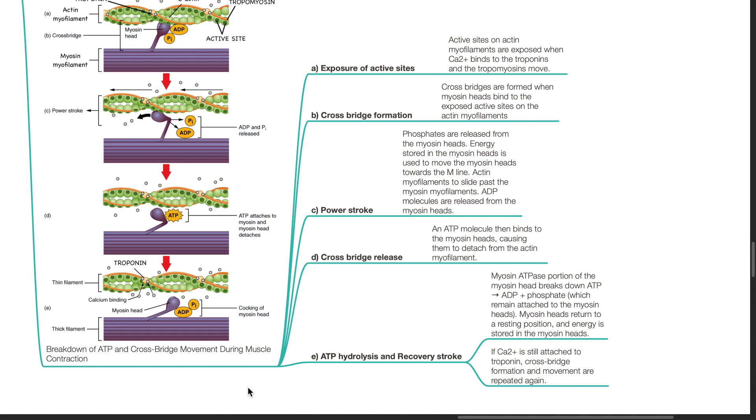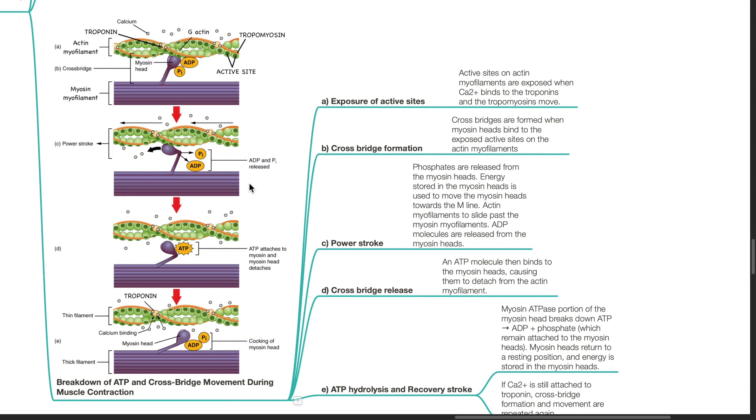Breakdown of ATP and cross bridge movement during muscle contraction. Exposure of active sites: active sites on actin myofilaments are exposed when calcium binds to the troponins and tropomyosins move. Cross bridge formation: cross bridges are formed when myosin heads bind to the exposed active sites on the actin myofilaments. Power stroke: phosphates are released from the myosin heads.